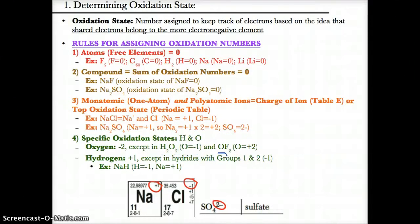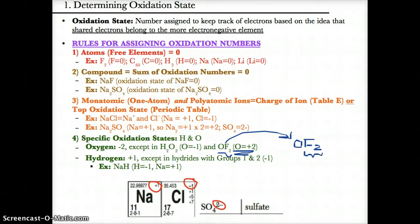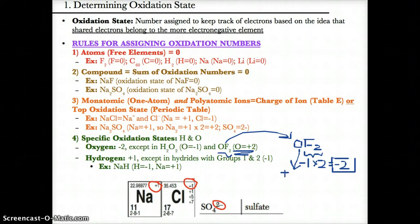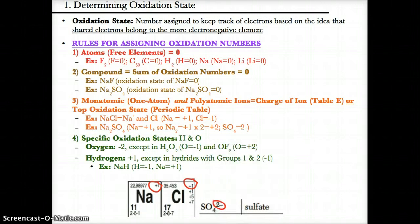The other exception is OF2, where O has an oxidation state of +2. Breaking this apart: F2 has a top oxidation state of -1 times 2, giving a total of -2. So O must be +2 to balance the -2 from F2 to zero. Remember: oxygen is usually -2, except in H2O2 where it's -1, and in OF2 where it's +2.